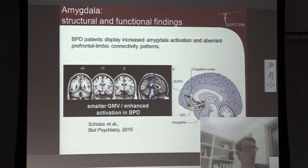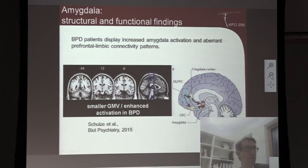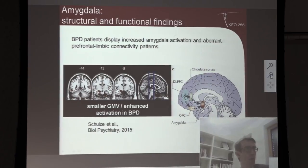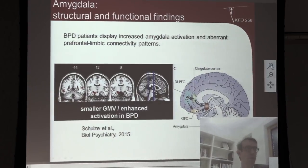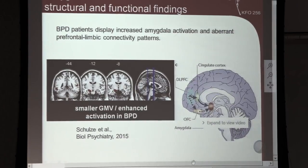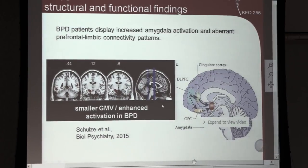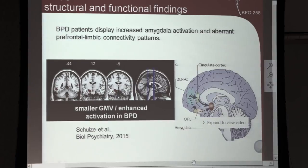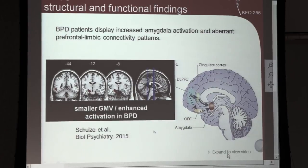To illustrate where this takes place: the amygdala is regulated by two pathways both stemming from the dorsolateral prefrontal cortex — one through the cingulate cortex and the more ventral pathway through the orbitofrontal cortex. In this meta-analysis, we found that not only does the amygdala show enhanced activation in borderline personality disorder, but it also has a smaller volume overall. There is a severe disturbance of the amygdala and the prefrontal regulation pathway.